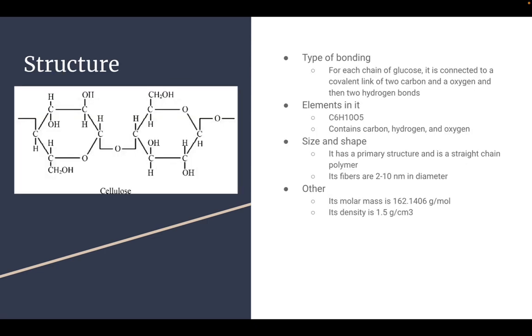The structure. Over here is a diagram of cellulose. So, the types of bonding. For each chain of glucose, it is connected to a covalent link of two carbons and an oxygen and then two hydrogen bonds.